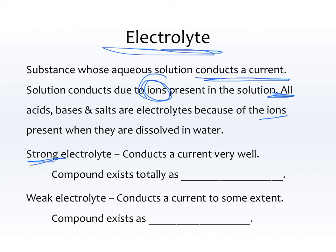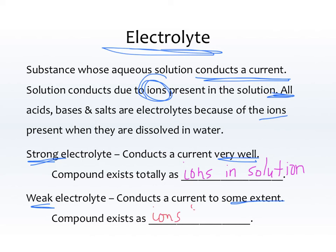Some of them are strong electrolytes, which means it conducts a current very well, and some of them are weak electrolytes, which means it conducts a current only to some extent. Strong electrolytes exist totally as ions in solution, so they conduct very well. Weak electrolytes exist as both ions and molecules in solution, so they don't conduct electricity quite as well.